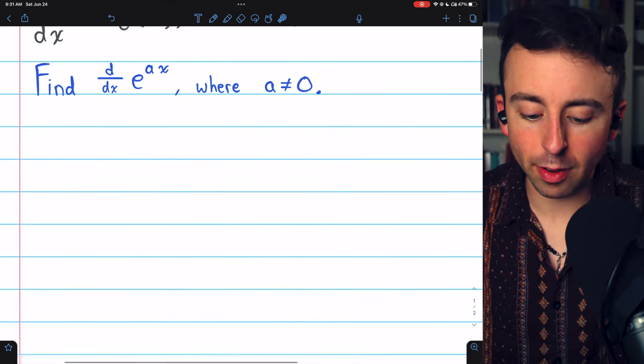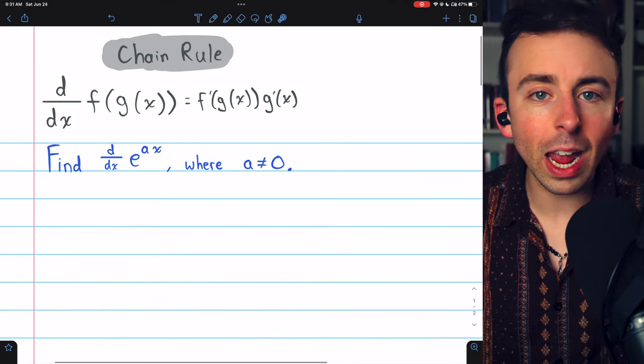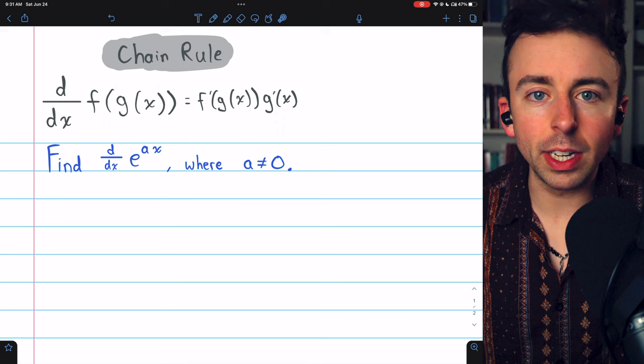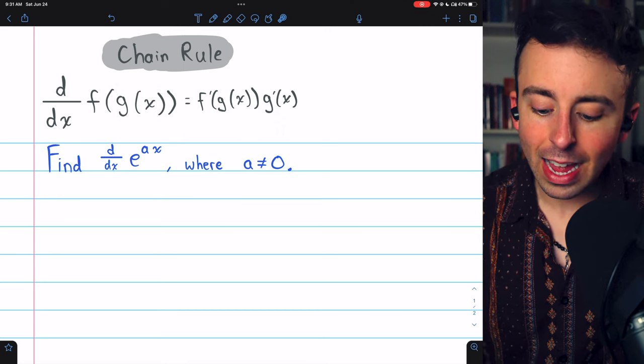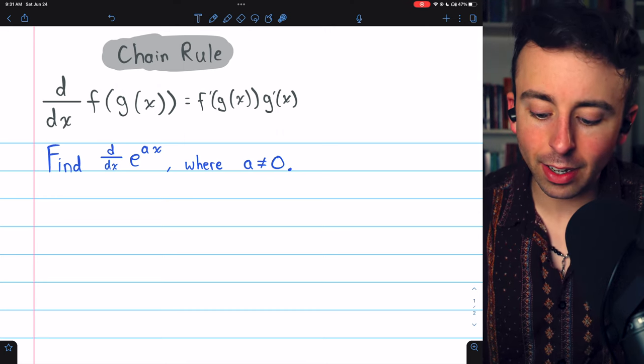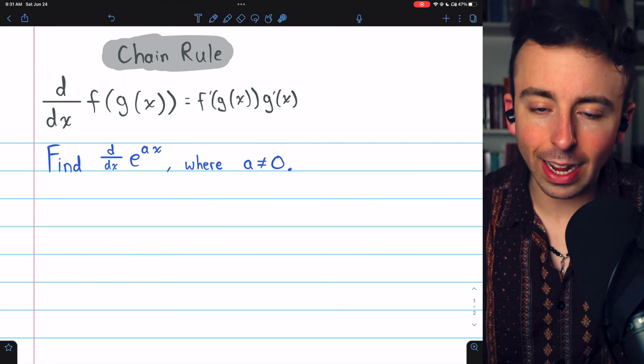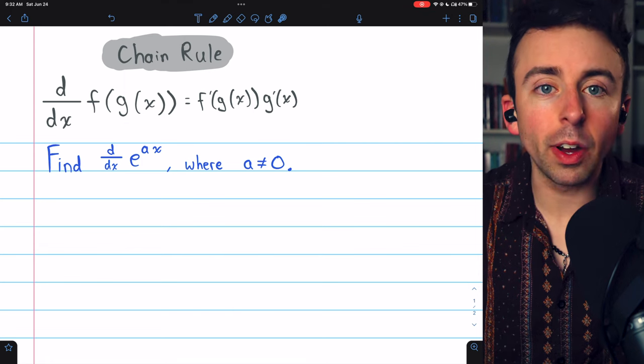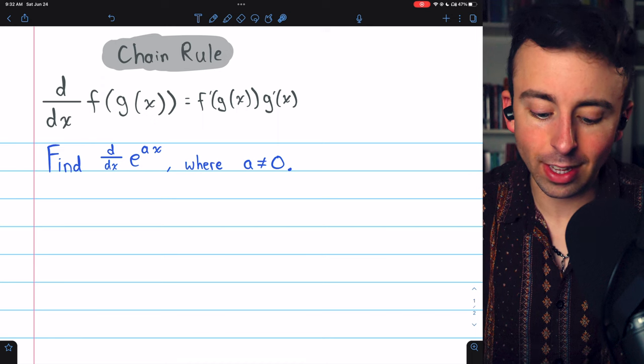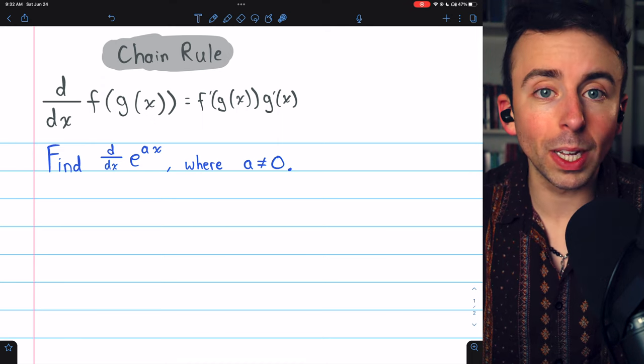This is a composite function, so we'll need to use the chain rule, which tells us the derivative of a composite function f of g of x is f prime of g of x times g prime of x. If we can accurately identify the outside and inside function, the f and the g, we'll be able to apply the chain rule.